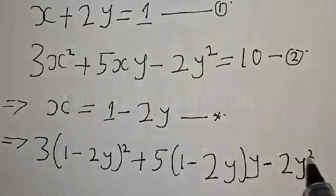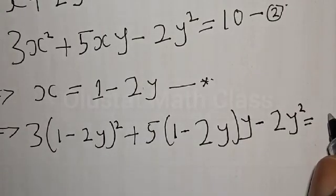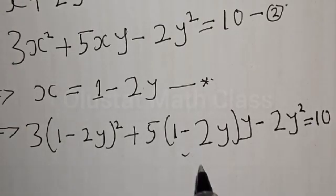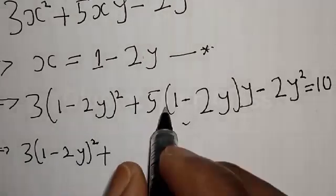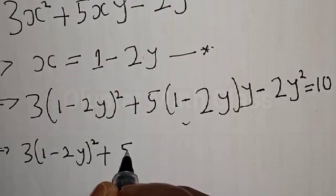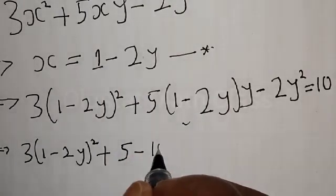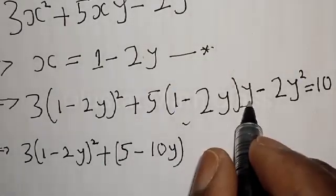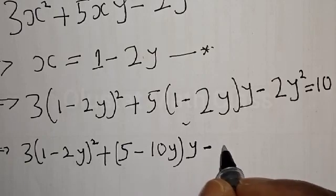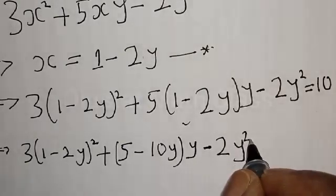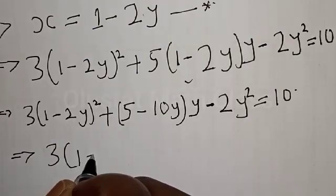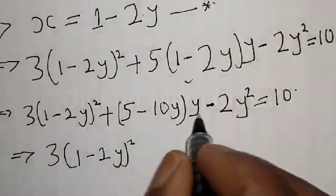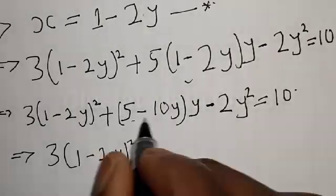Minus 2y squared is equal to 10. Let's work with this. We have 3 times (1 minus 2y) all squared, plus opening the bracket: 5 times 1 gives 5, minus 5 times 2 that is 10y, then multiply by y. Minus 2y squared is equal to 10. Opening the bracket with y gives plus 5y.